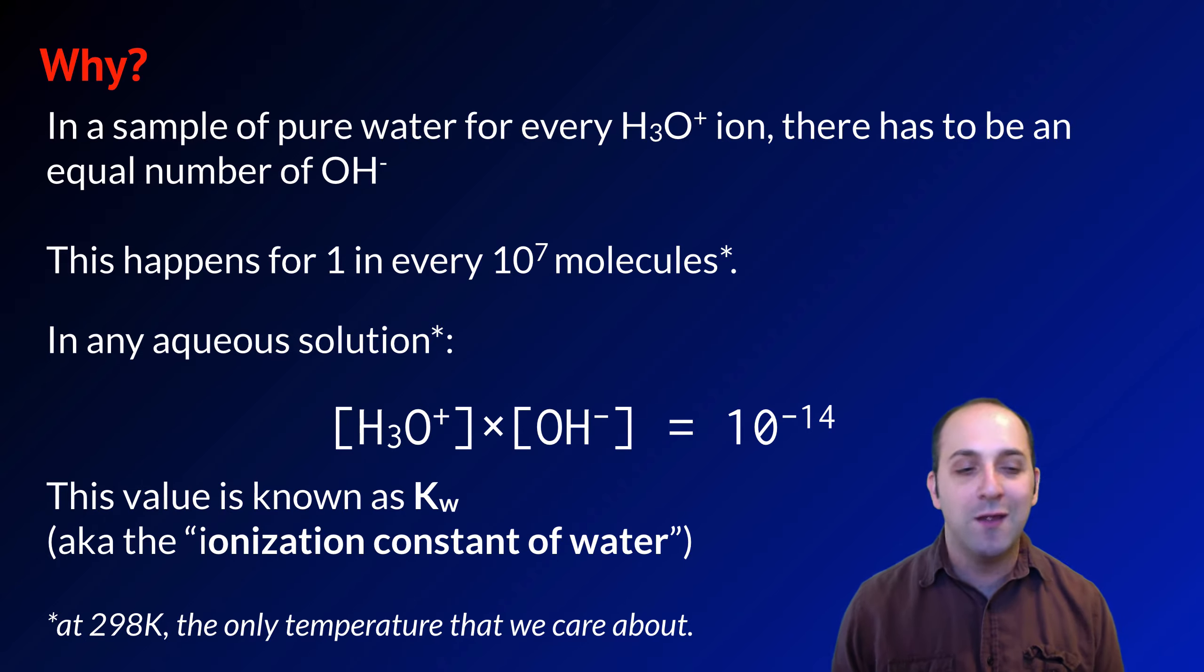And remember, this is really only at 298 degrees Kelvin. This dissociation constant does change a little bit as the temperature shifts, but 298 room temperature, 25 degrees Celsius, is always a good reference value. And that's the only one that we really care about.